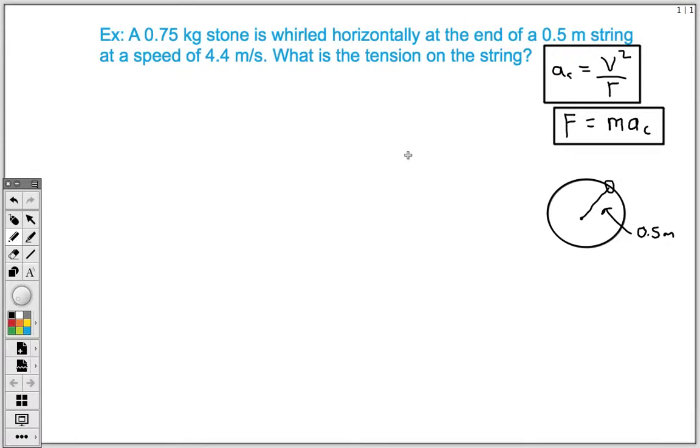So here's our problem here. We have a 0.75 kilogram stone and it's whirled horizontally at the end of a 0.5 meter string at a speed of 4.4 meters per second. And what we want to figure out is what is the tension on the string as we're doing that.